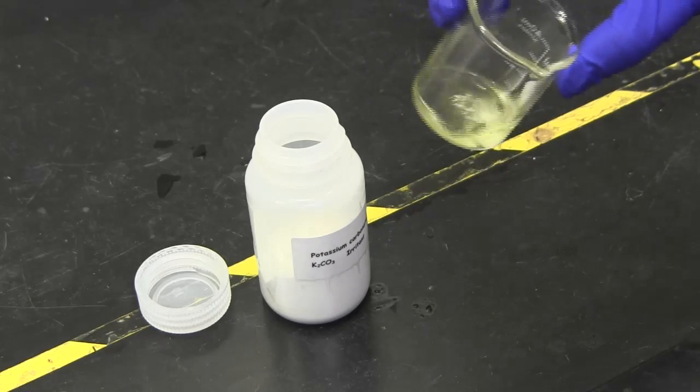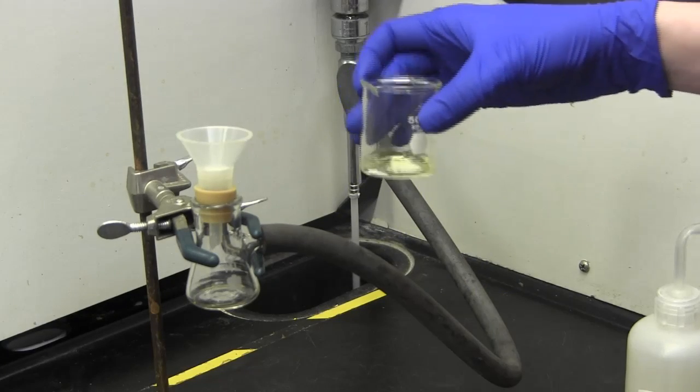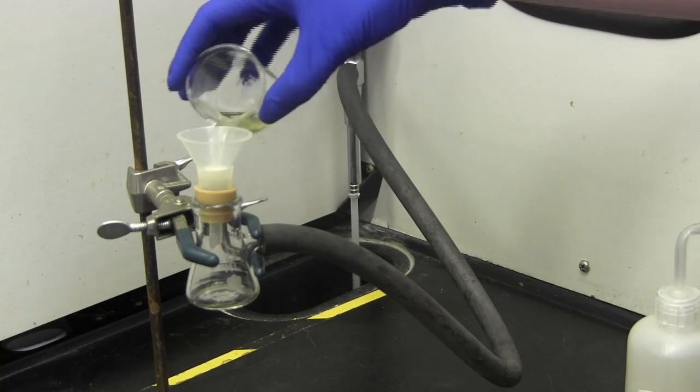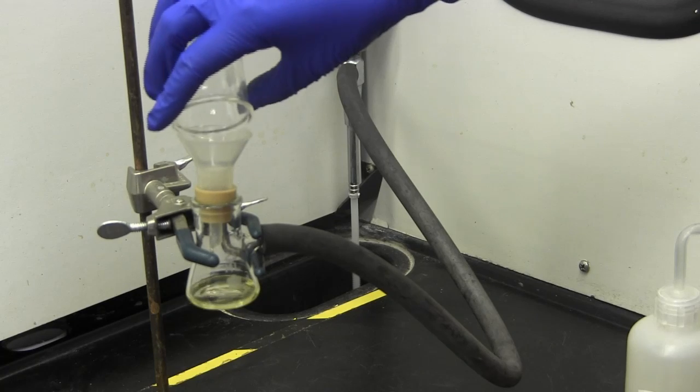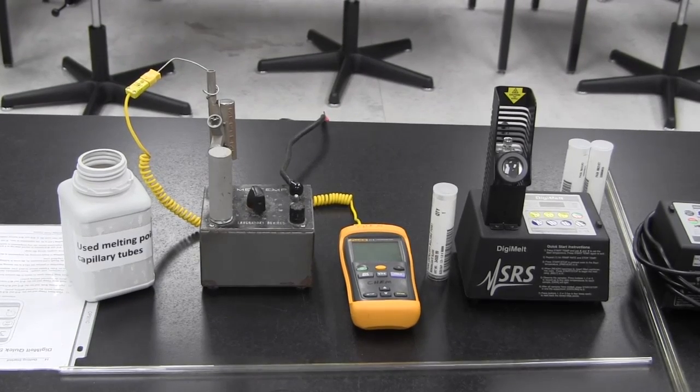You will need to filter the drying agent off using a Hirsch filter. Then, evaporate your unknown solution using a rotary evaporator and transfer it into a wave vial. You will need to obtain IR and NMR spectra, as well as the melting point.